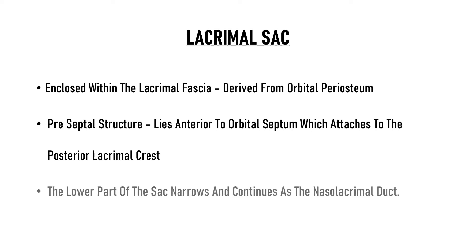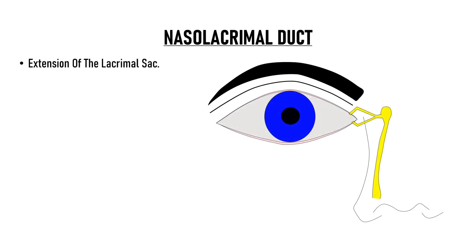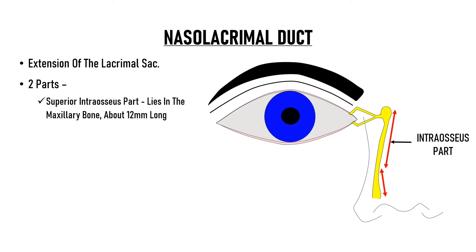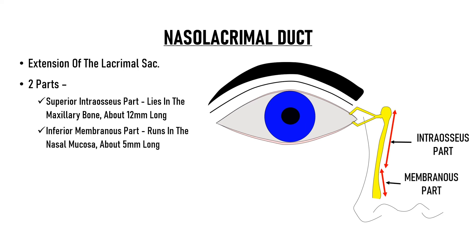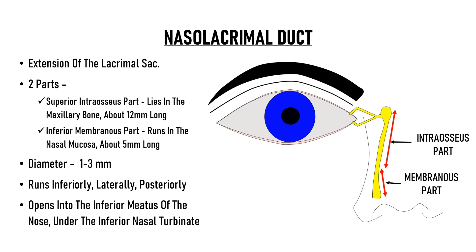The lower part of the sac narrows and continues as the nasolacrimal duct, which is an extension of the lacrimal sac divided into two parts. The superior intraosseous part lies in the maxillary bone and is about 12 mm long. The inferior membranous part runs in the nasal mucosa and is about 5 mm long. The diameter of the duct varies from 1 to 3 mm. The duct is not directed straight down — it runs inferiorly, laterally, and posteriorly to open into the inferior meatus of the nose under the inferior nasal turbinate.